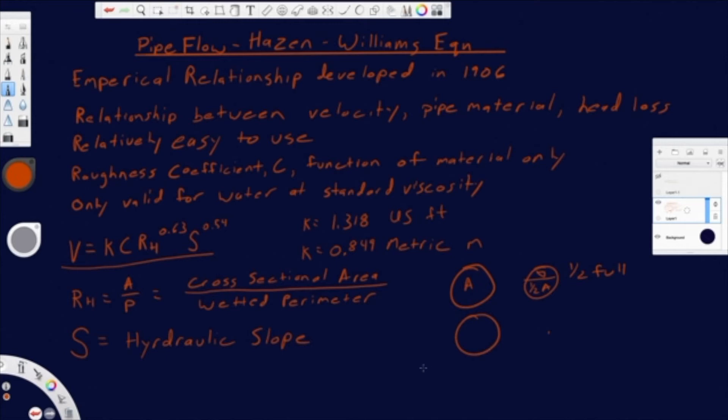Now, your wetted perimeter is the material, the perimeter of the material that's being wetted by the fluid it's conveying. Hopefully that makes sense. So in the case of a pipe that is flowing full, it is just going to be this full perimeter, right?